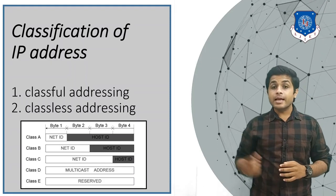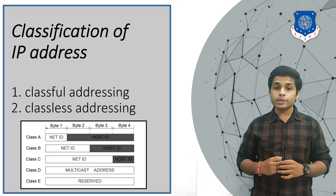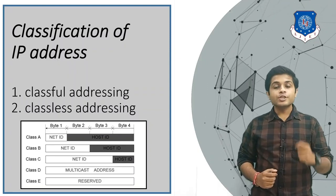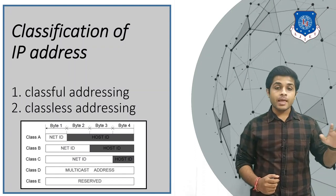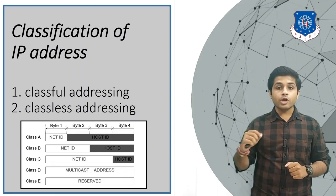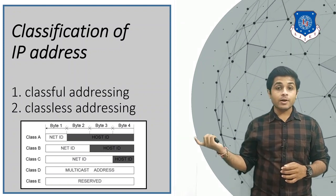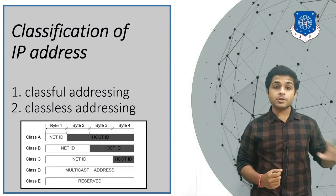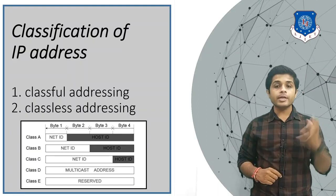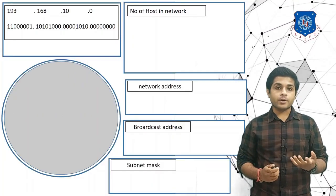In Class B, the first two bytes (16 bits) are for network ID and 16 bits are for host ID. So 2 raised to 16 individual networks are possible, and in one network you can allocate 2 raised to 16 devices. In Class C, the first 24 bits are for network ID, meaning 2 raised to 24 individual networks are possible, and in one network 2 raised to 8 hosts are possible.